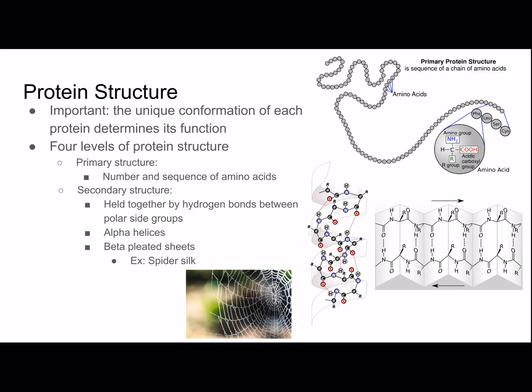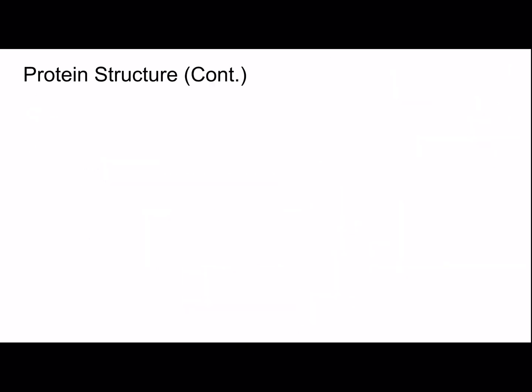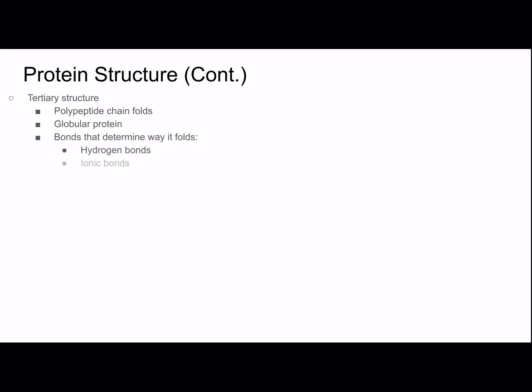Keep that in mind — primary structure is very important. Next, let's go to tertiary structure, which is basically how the polypeptide chain will fold. At this point it's called a globular protein — it's three-dimensional and round. There are many different types of bonds that will determine the way it folds, including hydrogen bonds, ionic bonds, and disulfide bridges, which are formed between amino acids with sulfhydryl groups.